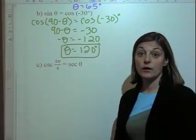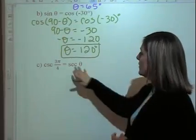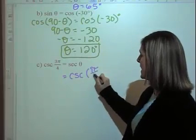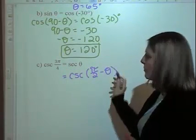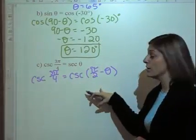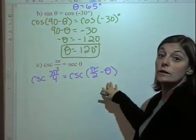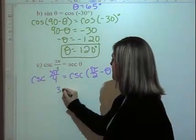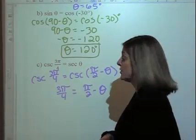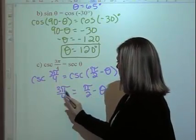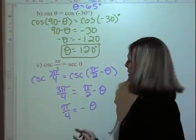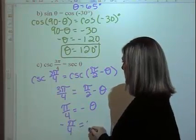Let's look at cosecant of 3π/4 equals secant of θ. We know secant of θ equals cosecant of (π/2 − θ). So cosecant of 3π/4 equals cosecant of (π/2 − θ), meaning 3π/4 = π/2 − θ. Subtracting π/2 from both sides: 3/4 − 1/2 = 1/4, so π/4 = −θ, which means θ = −π/4.